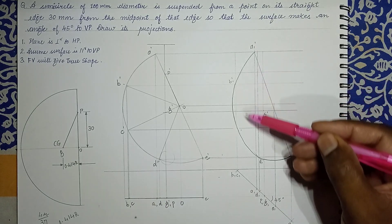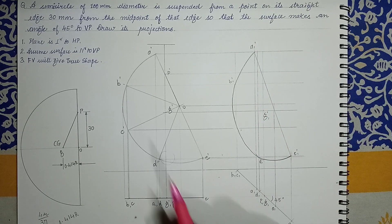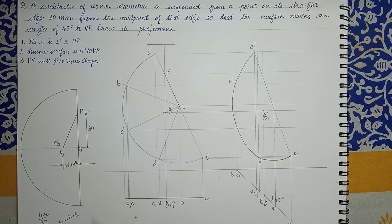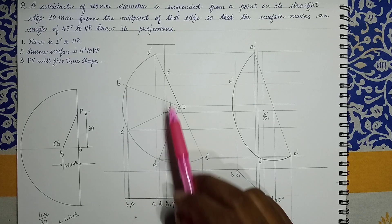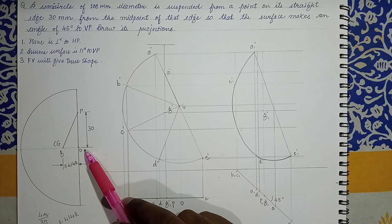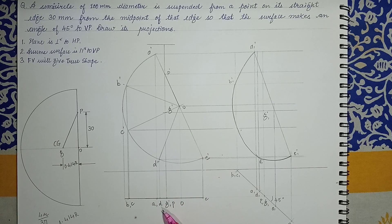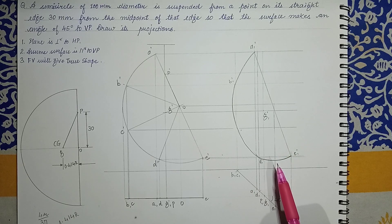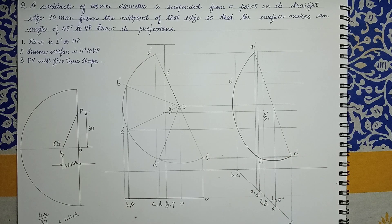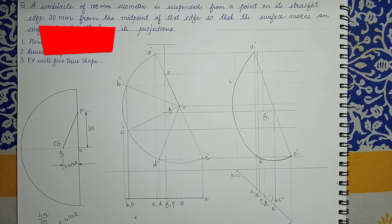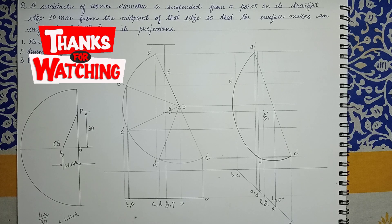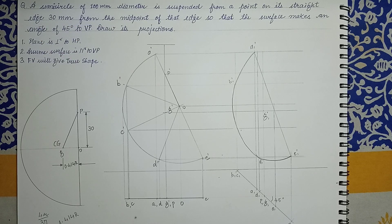This is the projection. Basically when the given circle is suspended at a given point at a distance from the midpoint, you get a true shape in the front, line view in the top. And when this plane is making an angle of 45 degrees with VP, this is how it appears. Thank you dear students, hope the concept is clear with this problem. Please do like, comment and subscribe. Have a good day.